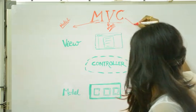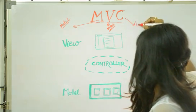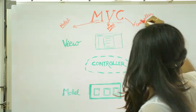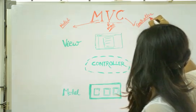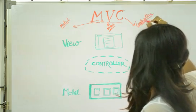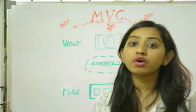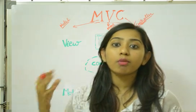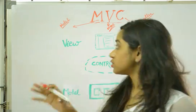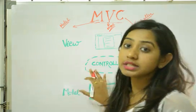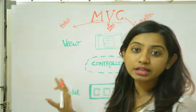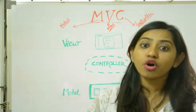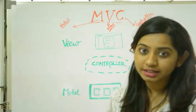The third and most important component is the Controller. Controller is nothing but the software code written to perform interactions between the model and the view. Let's go through this diagrammatically so that you get a clear picture of this MVC architecture.